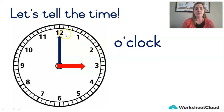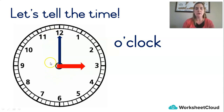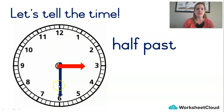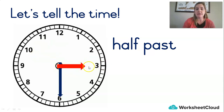If the minute hand is pointing to the 12, it's exactly 3 o'clock — that's the o'clock position. So this is 3 o'clock. If the minute hand is pointing down at the bottom, we say that it is half past. Look at the clock — if we drew a line down the middle, we'd see that that is half of the clock, and that's why we say that position is half past. Half past what? Well, we have to look at the hour hand, and it's still at the 3 o'clock position — so it's half past 3.